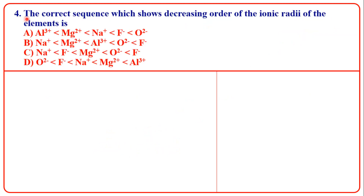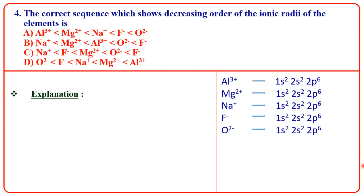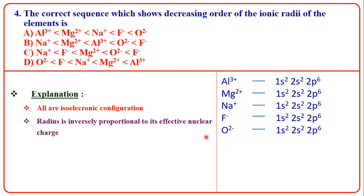The next question: the correct sequence showing decreasing order of ionic radius for Al³⁺, Mg²⁺, Na⁺, F⁻, O²⁻. These species have the same electronic configuration — this is an isoelectronic series. For isoelectronic configuration, the radius is inversely proportional to its effective nuclear charge.